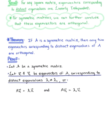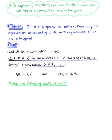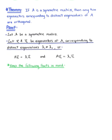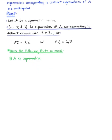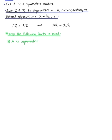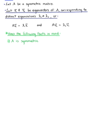As we proceed with this proof, we want to keep two facts in mind. The first is that matrix A is symmetric — in other words, A equals the transpose of A. The second fact is that for any vectors x and y in Rⁿ, the dot product of x with y equals the dot product of the transpose of x with y.